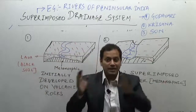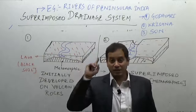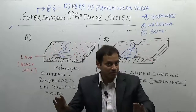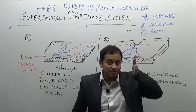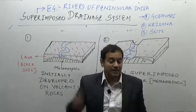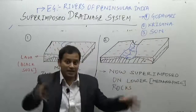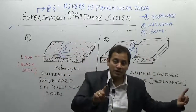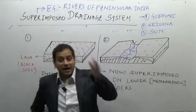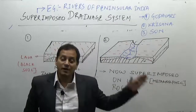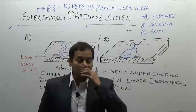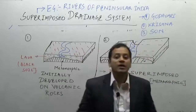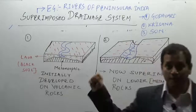The key difference between superimposed and antecedent drainage systems: in antecedent drainage, there is an upliftment of the land; in superimposed drainage, there is no upliftment. In antecedent drainage, rivers maintain their original course by cutting valleys through uplifted mountains. In superimposed drainage, rivers cut down and get superimposed on a lower geological formation. Both are part of the insequent drainage system. With this, we are finished with drainage systems — next we will cover drainage patterns.